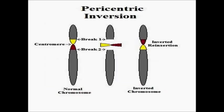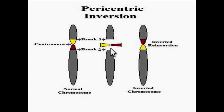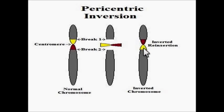And here we have a diagram — I actually just drew this diagram up in order to show you what happens. So if you have two breaks in the chromosome, and those two breaks are on either side of the centromere, and then when it's put back together, you have what used to be on the long arm of the chromosome now on the short arm, and what used to be on the short arm is now on the long arm of the chromosome.